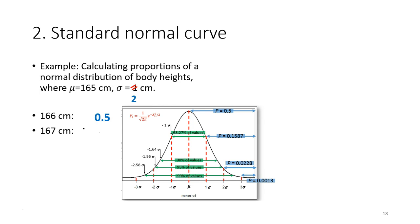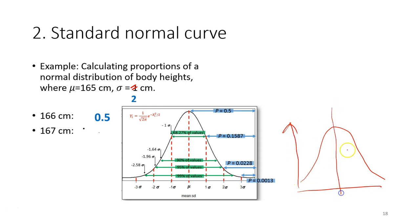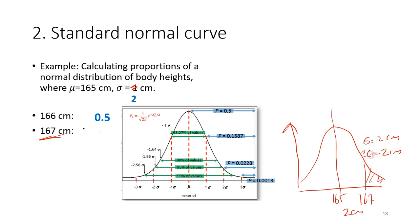Similarly, if the value is 167 with population mean 165 and standard deviation 2, the difference is 2 cm. Since one standard deviation equals 2 cm, the difference of 2 cm equals exactly 1 standard deviation. So the z-value is 1. This uses the same formula: value minus mean, divided by standard deviation.